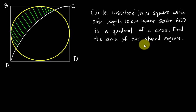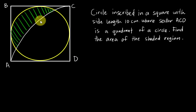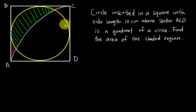Find the area of the shaded region — the green colored shaded region here. When I first tried this question, I tried to break it in half, find the area outside the circle by using the square minus the circle, divide by four. But I realized I was stuck because there's no way to find these two small parts here.